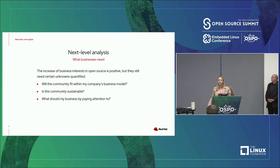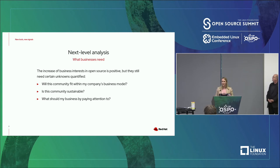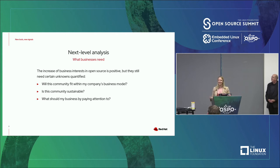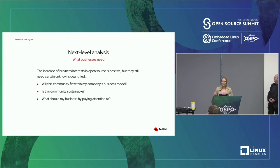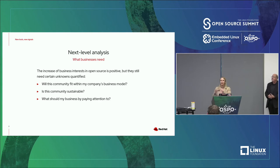Some of the key questions include: is this community going to fit with the business model? You can start looking at the seasonality of communities — how their behavior goes over the year — and see if that high production or high evolution is going to match when your company needs it. Or, is the community sustainable? Are you about to depend on something where, if two people win the lottery tomorrow, you are kind of at the end of your road? Starting to see how many people are actually involved, and how heavily you're going to depend on it versus the size of the development team and maintainers.